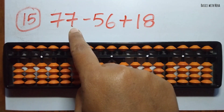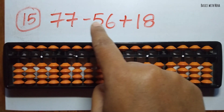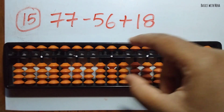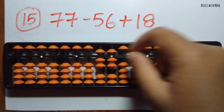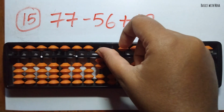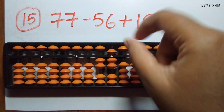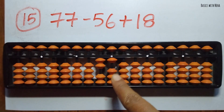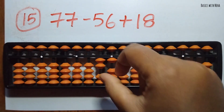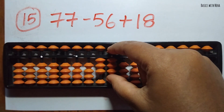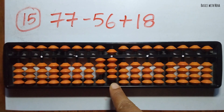The fifteenth question: 77 minus 56 plus 18. First take 77. Now we should minus 56 — minus 5 can be done in the 10's rod and minus 6 can be done in the 1's rod. Now add 18 — 1 can be done directly in the 10's rod and 8 can be added directly in the 1's rod. The answer is 39.